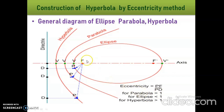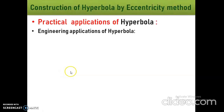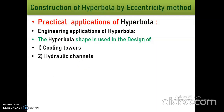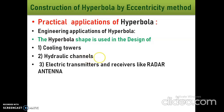This is the general diagram of ellipse, parabola, and hyperbola. The fixed straight line is called the directrix line. Now, practical applications of hyperbola: the hyperbola shape is used in the design of cooling towers, hydraulic channels, and electric transmitters and receivers like radar antennas. These are some of the practical applications of the hyperbola shape.